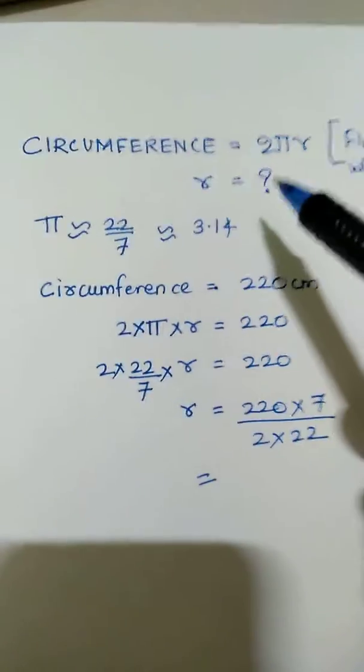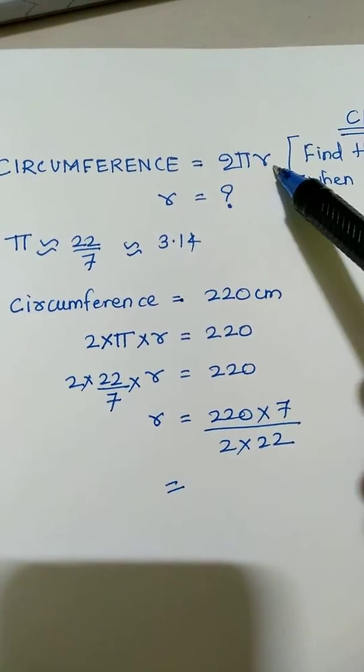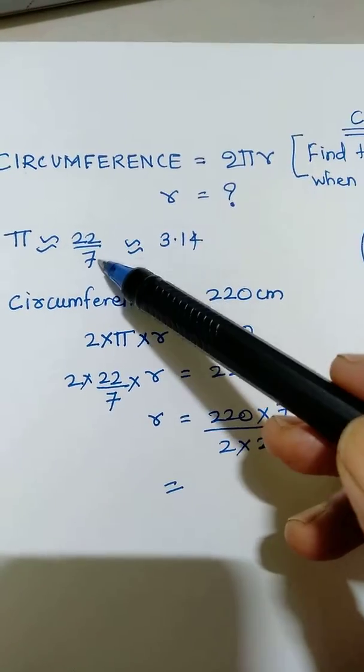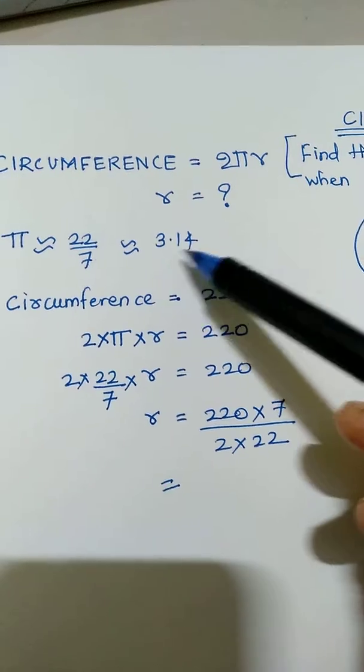So we have the formula for circumference 2πr. The approximate value of pi is 22/7 or 3.14.